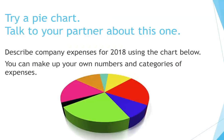Try a pie chart. Talk to your partner about this one. Describe company expenses for 2018 using the chart. You can make up your own numbers and categories of expenses. Pause the video if you'd like more time to describe this pie chart.